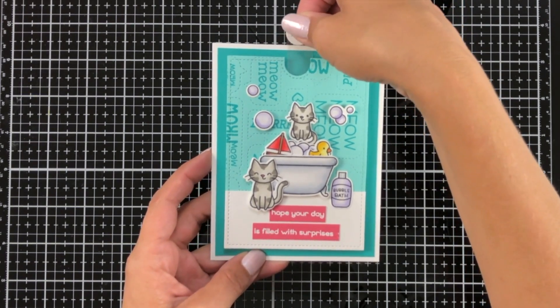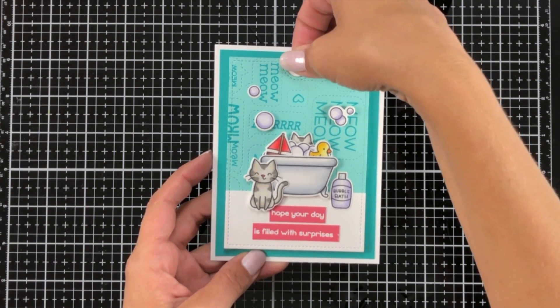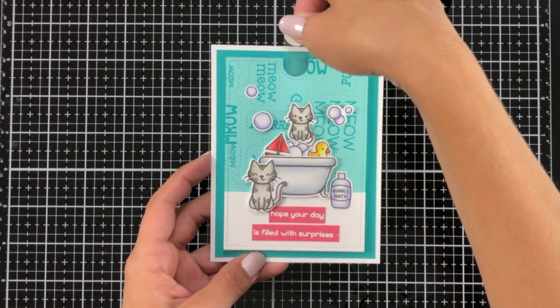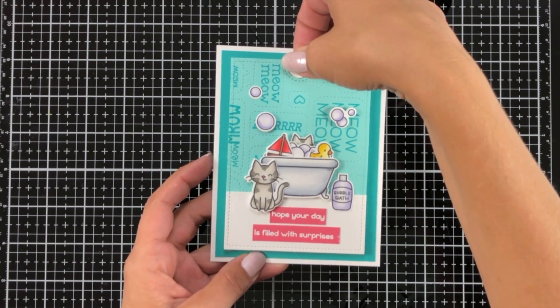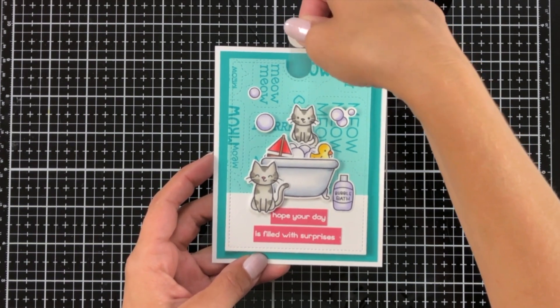I hope you enjoyed today's video and using acetate for your interactive cards to be able to stretch that even further to use with some of the smaller stamps that Lawn Fawn carries. Hope you enjoyed it. Thanks for joining me and have an amazing day.